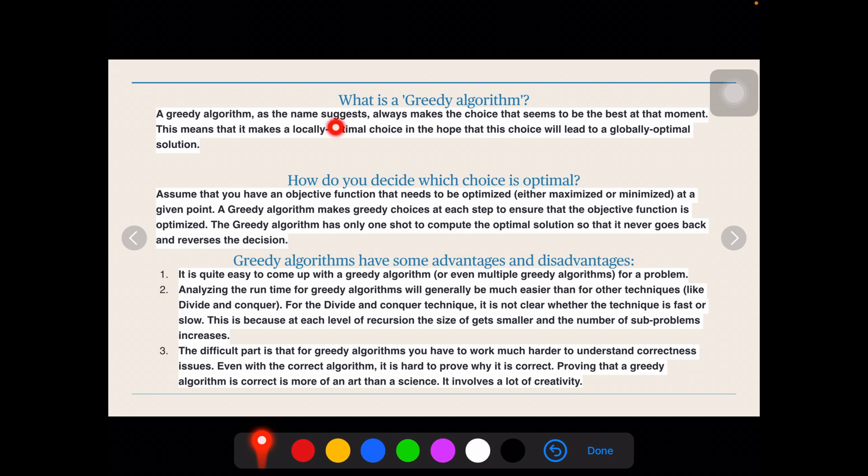A greedy algorithm, as the name suggests, always makes the choice that seems to be best at the moment. So whenever we are solving a problem, we will select something which is best for us according to the question, each one at a step. This means that it makes a locally optimal choice in the hope that this choice will lead to a globally optimal solution. Just hold on, there is a beautiful example just right now after these two paragraphs.